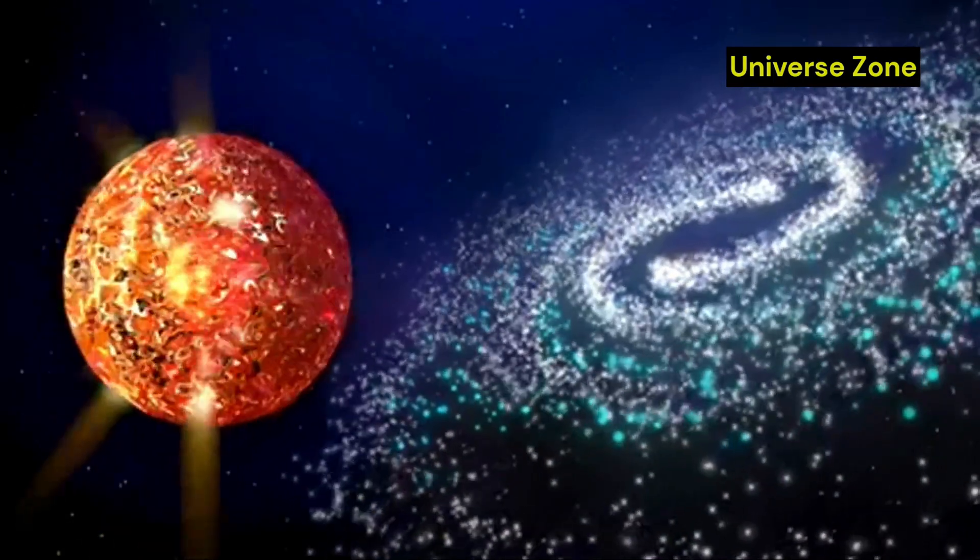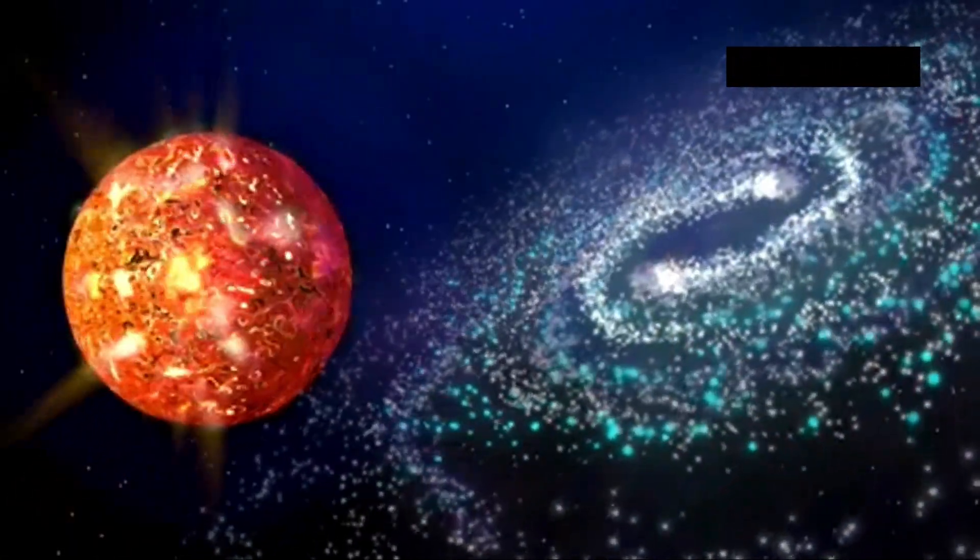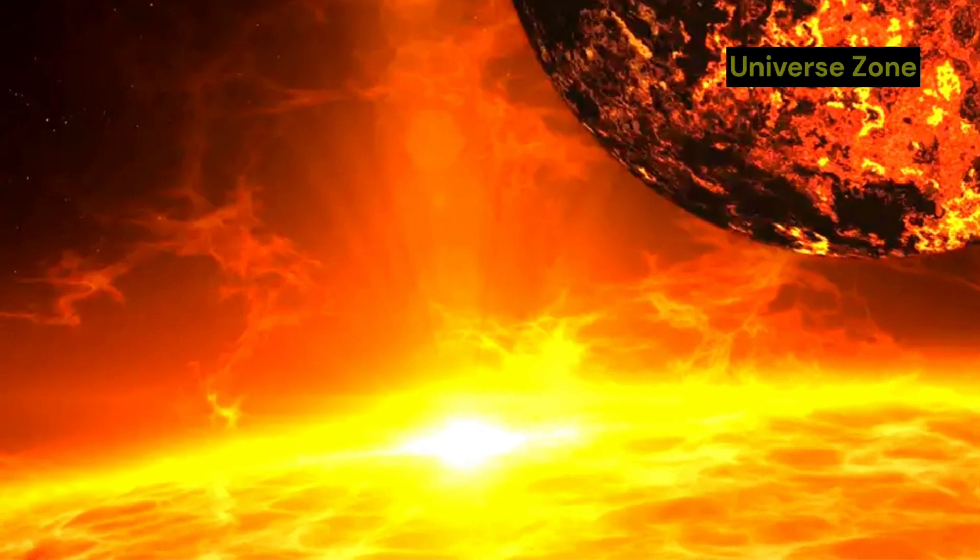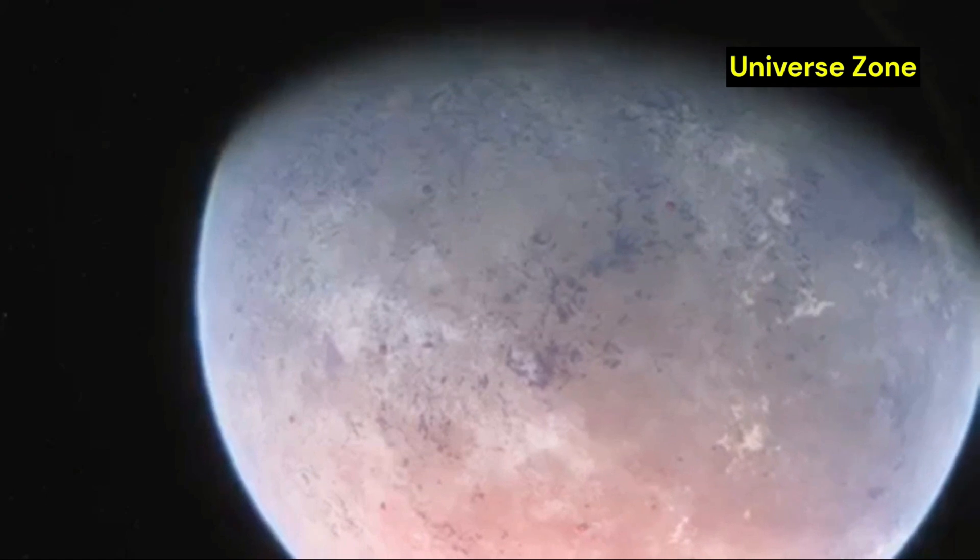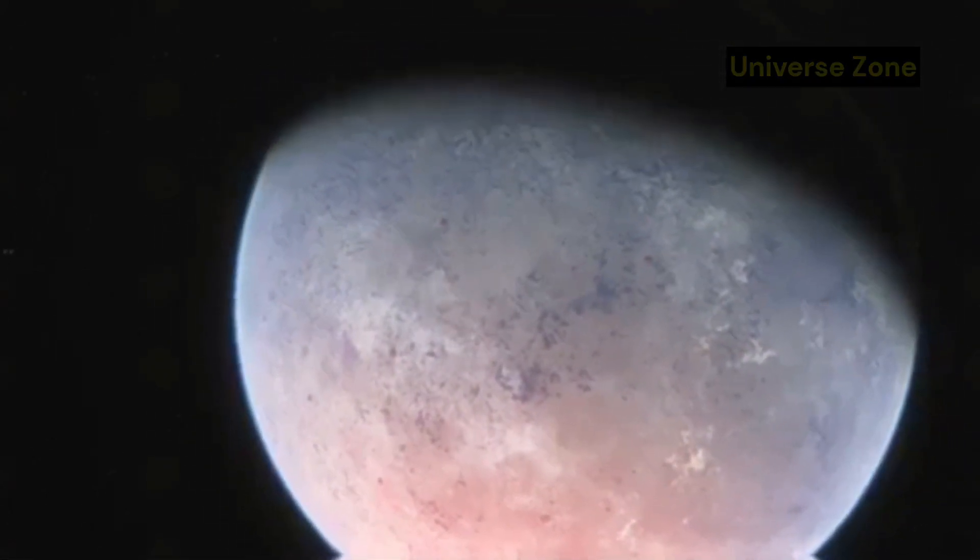However, Proxima Centauri is also much more active than our Sun. It frequently emits powerful flares that could strip away Proxima b's atmosphere and make it uninhabitable.